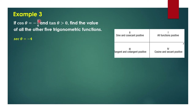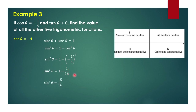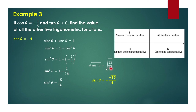For secant of theta, we get the reciprocal of negative 1 fourth, which is negative 4. Since we know cosine theta, we find sine squared theta using 1 minus cosine squared theta. By substitution, that is 1 minus the square of negative 1 fourth, giving us 1 minus 1 over 16, so sine squared theta is 15 over 16. Taking the square root of both sides, sine theta equals negative square root of 15 over 4. This is negative because the angle is in the third quadrant.